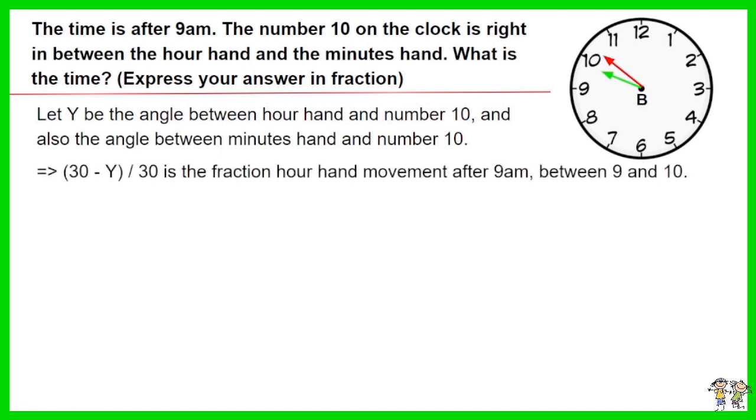30 minus y, divided by 30, is the fraction of the hour hand movement after 9am between 9 and 10.